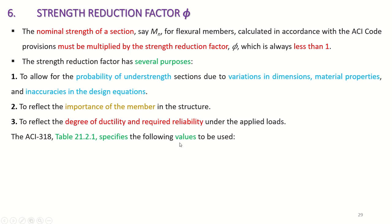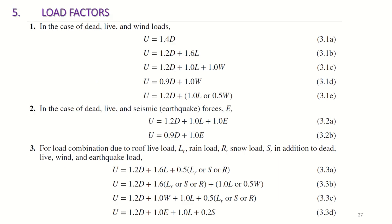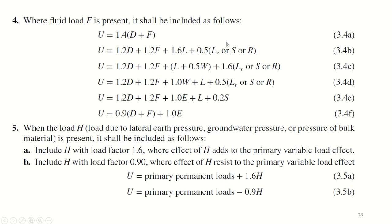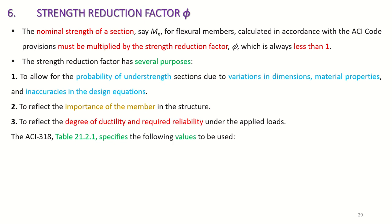These are the load factors we just discussed, because load factors are there to increase the effect of the calculated load. For example, your dead load is 100 and you multiply by 1.4, so it becomes 140 — you are increasing your loads to be on the safe side. Similarly, strength reduction factors are there to reduce the strength. The nominal strength of a section — say MN for flexure members — calculated in accordance with ACI code provisions must be multiplied by the strength reduction factor phi, which is always less than 1.